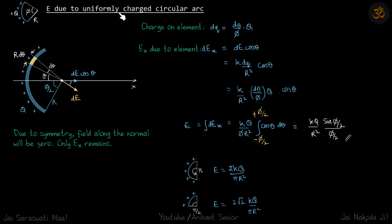Electric field due to a uniformly charged circular arc. We have an arc with charge +q, and the angle subtended at the center is phi, radius is r. We need to find the field at the center of this arc, so let's draw the arc and bisect it at the center.